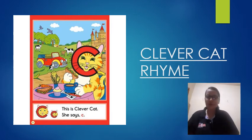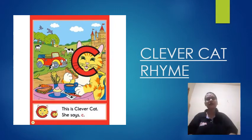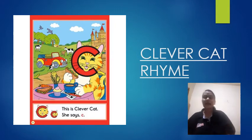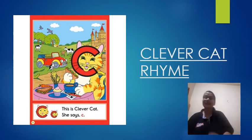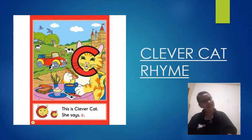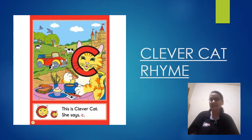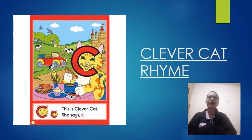Let us recite one more time. Clever Cat says 'k', 'k', 'k'. Clever Cat says 'k' and cuddles close to me. She also makes another sound, another sound, another sound. She also makes another sound — you wait and see.